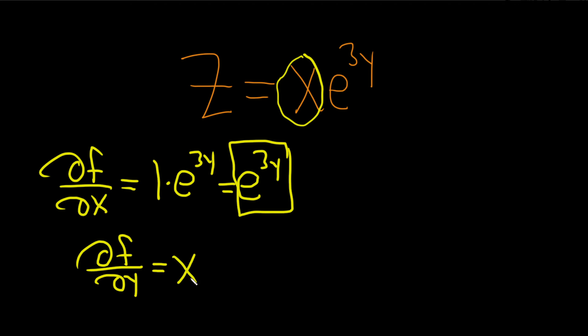The x will hang out. Now, the derivative of e to the x is e to the x. Here it's e to the 3y, so it'll be e to the 3y, and then times the derivative of the inside function, and that's the chain rule. So the derivative of 3y is just 3.